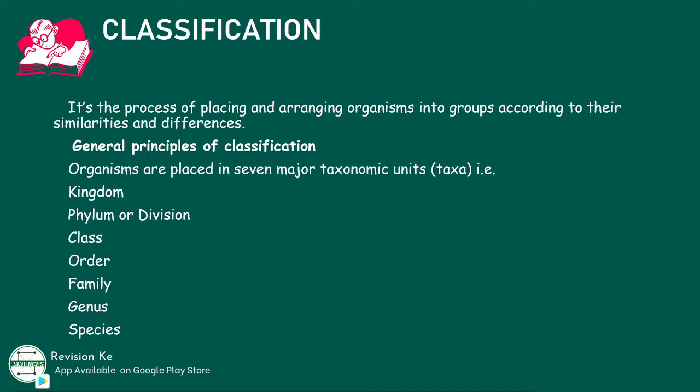Classification is a process of placing and arranging organisms into groups according to their similarities and differences. Organisms are placed in seven major taxonomic units: kingdom, division, class, order, family, genus, and species.